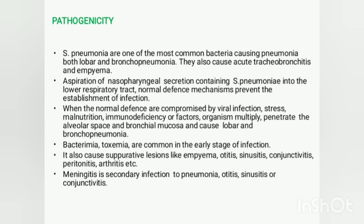Normal defense mechanisms such as entrapment, expulsion, or the cough reflex can prevent establishment of infection in the lower respiratory tract. However, when host defenses are lowered by viral infection, pulmonary congestion, stress, immunodeficiency, or malnutrition, Streptococcus pneumoniae can multiply and penetrate the bronchioles and alveolar spaces, causing lobar and bronchopneumonia.